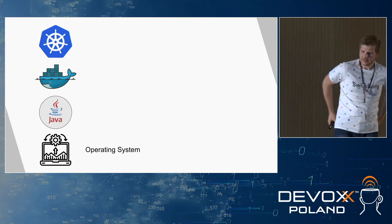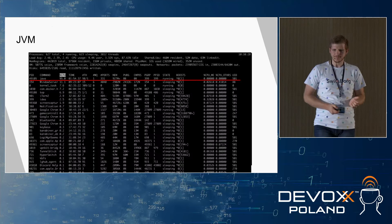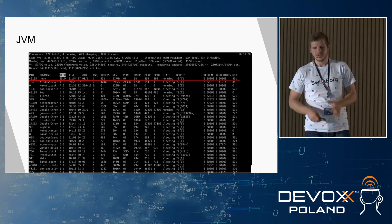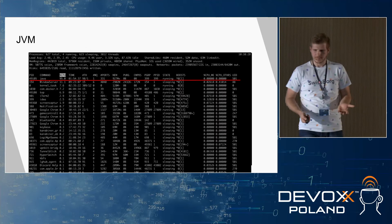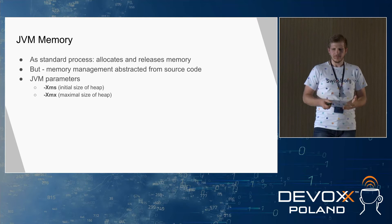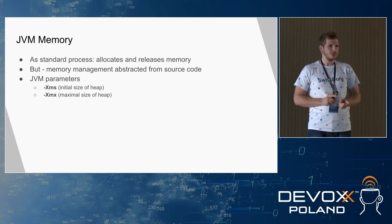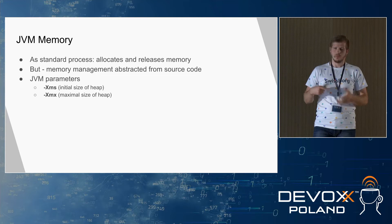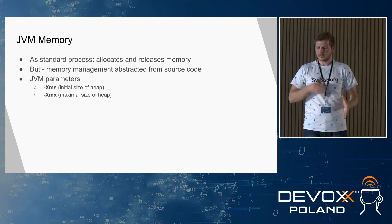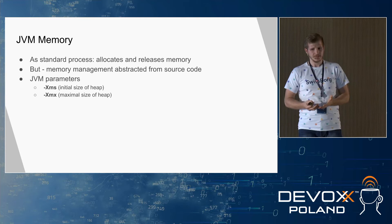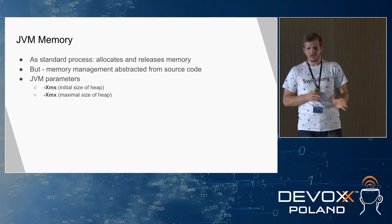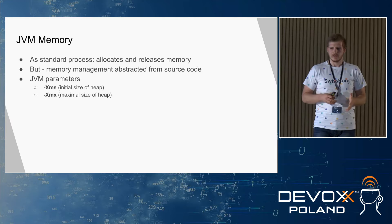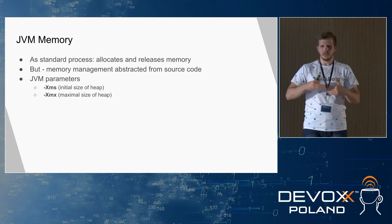Java is nothing more than a simple process at the operating system level, so all the rules we discussed apply to Java as well. It's the Java process that allocates and releases memory, but we don't care about that in source code as we do in C or C++ — it's a Java abstraction that manages it. We do have parameters to influence how Java manages memory.